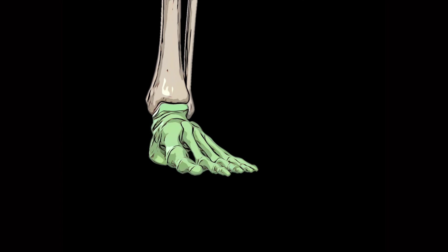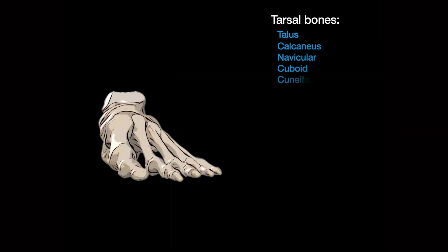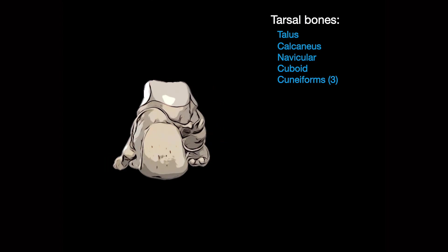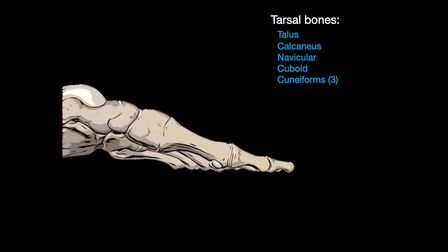In this lecture we will review the osseous, articular, and muscular structures of the foot complex. First we will review the osseous structures. The foot is made up of the tarsus, which includes the talus, calcaneus, navicular, cuboid, and cuneiform bones.